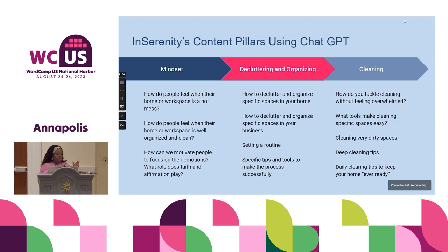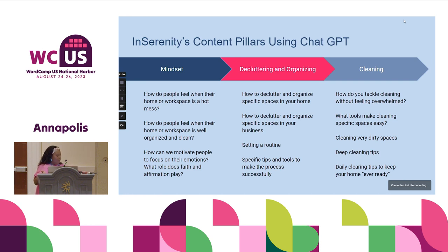These are the content pillars we came up with for Channibal. She only wanted three — she didn't want four. She wanted mindset, decluttering and organizing, and cleaning. I put a number of questions for each because I wanted her to understand exactly what she needed to be looking at when she looked for mindset content on AI or when she was thinking about it for herself.